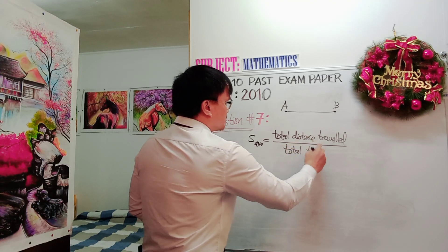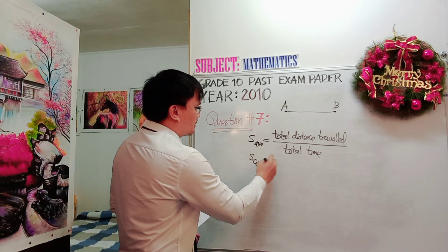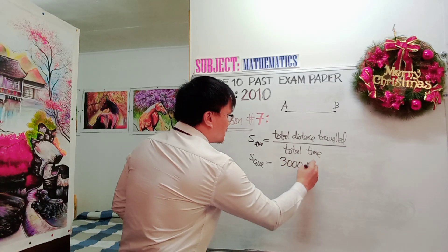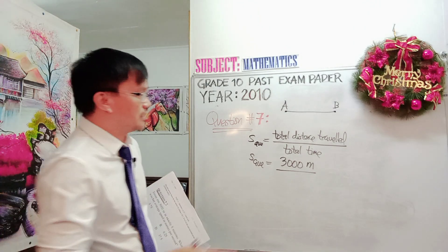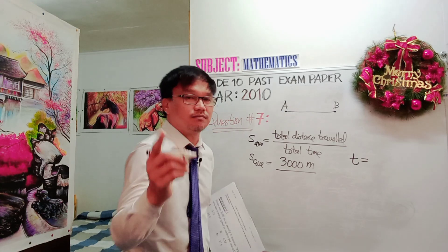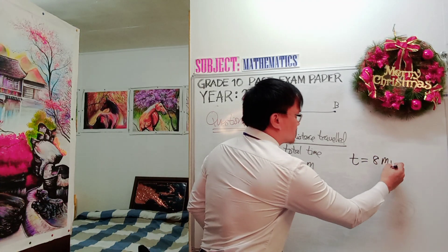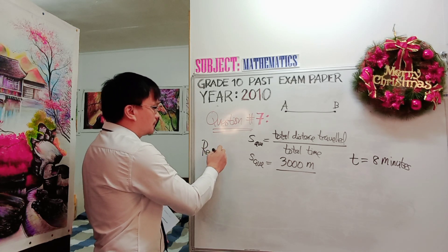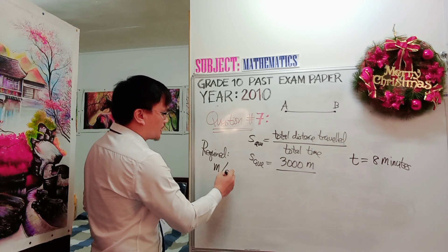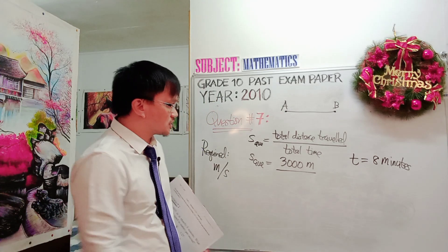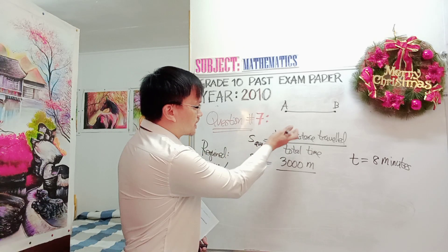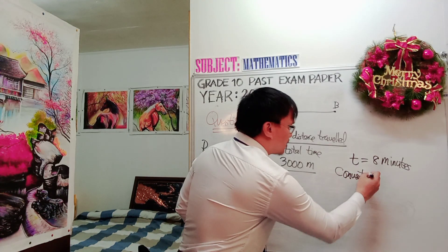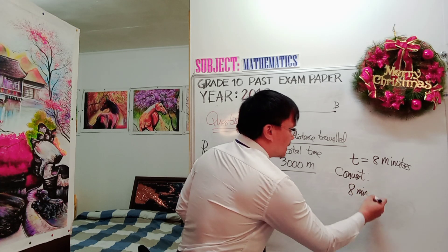The average speed now, therefore, when you substitute the total distance traveled is 3,000 meters divided by the total time given. Take note that the time given in the problem is in the unit 8 minutes. And the required answer is in meter per second. So before we perform the operation, you need to convert first. In your rough work, convert the 8 minutes into seconds.